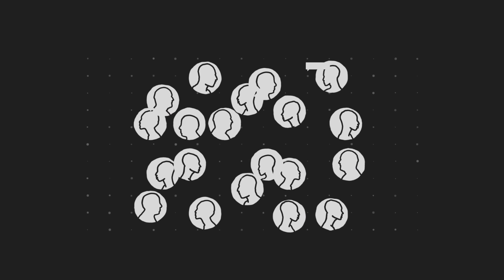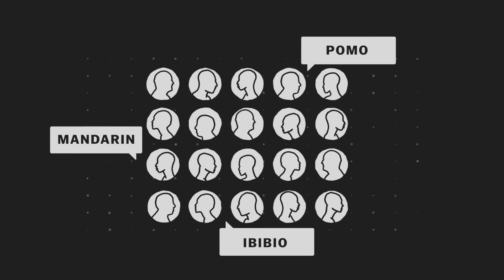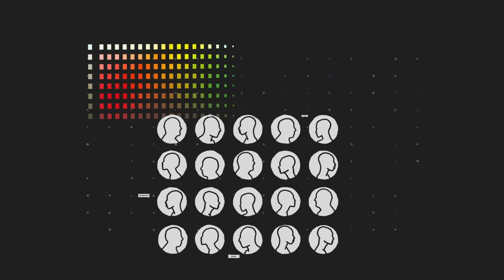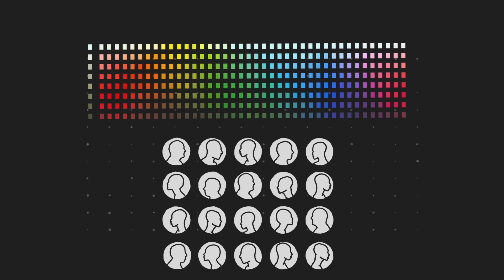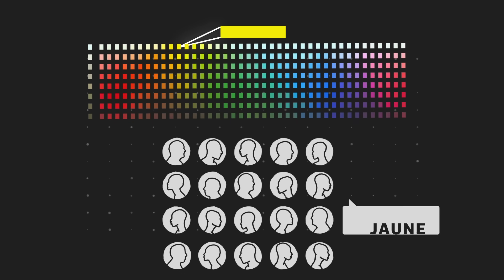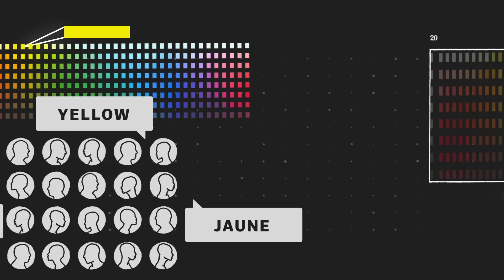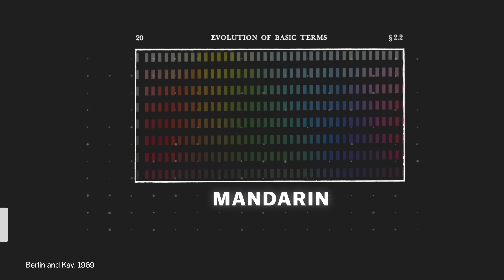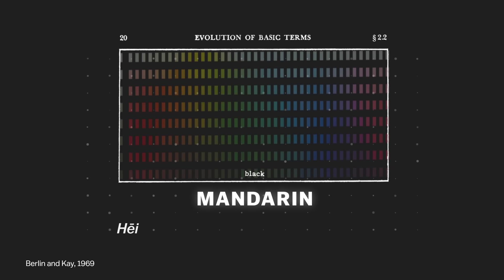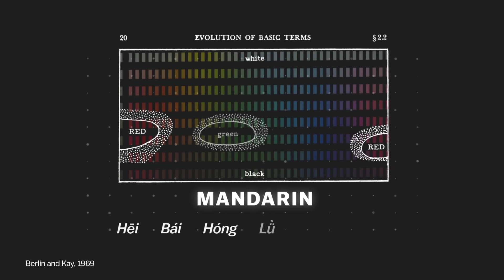They had asked 20 people who spoke different languages to look at 330 color chips and categorize each of them by their basic color term. And they found hints of a universal pattern. If a language had six basic color words, they were always for black or dark, white or light, red, green, yellow, and blue.